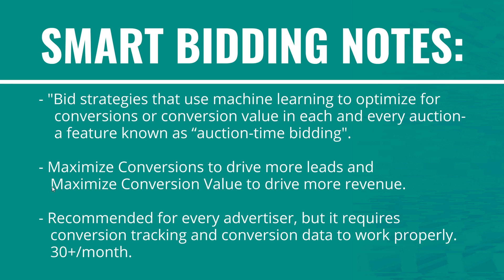Use maximize conversions if your goal is to drive more leads, and maximize conversion value if you want to drive more revenue. These are recommended for every advertiser. The more data you have, the better — Google recommends 30-plus conversions per month, roughly one per day. If you're only driving 5 to 10 conversions per month, smart bidding may not work as well. Previously you needed 15 conversions in 30 days to use smart bidding; now you can use it sooner, but more data means better performance.